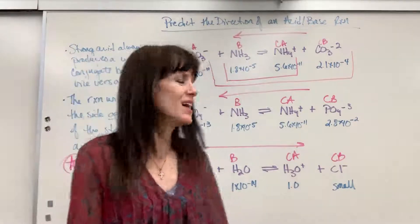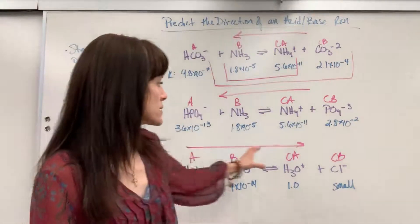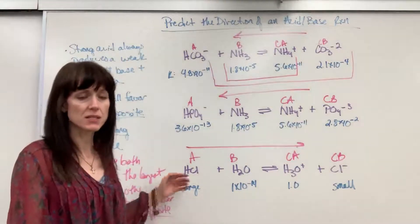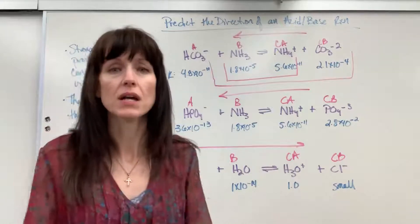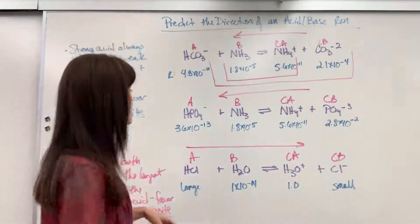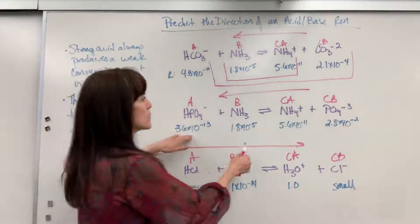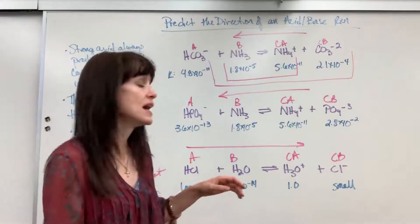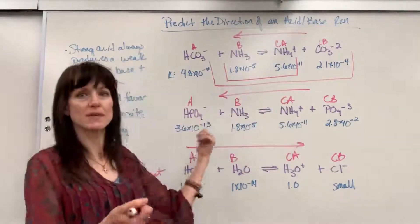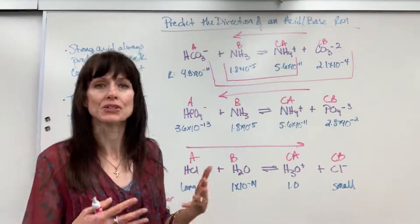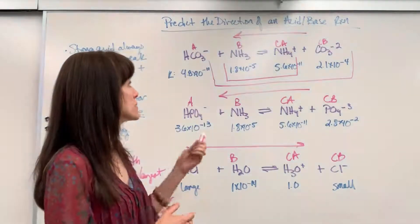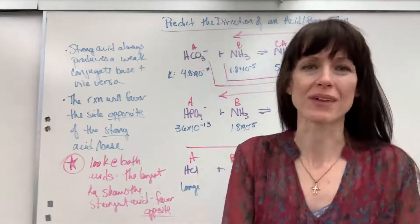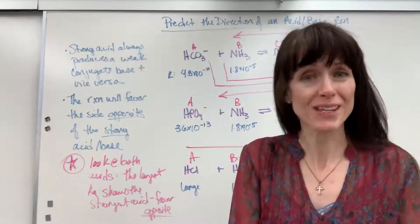So your takeaways: label acid, base, conjugate acid, conjugate base. Look at the K values — the ionization constants. For a quick approach, pick out both acids, compare those Ka values, and whichever is largest is the strongest acid. The reaction lies on the opposite side of the strongest because it has the greater ability to react. That's predicting the direction of acid-base reactions. Check out my playlist on acid-base equilibrium if you have other questions. Have a really good day.